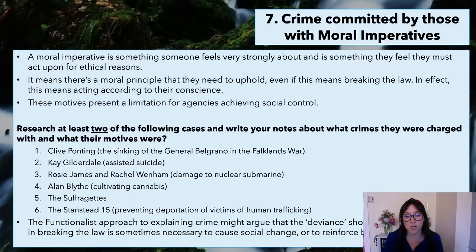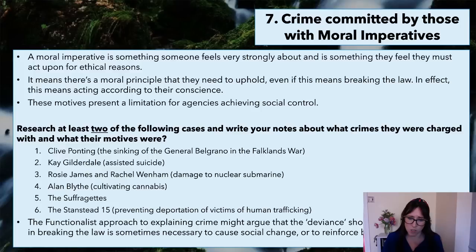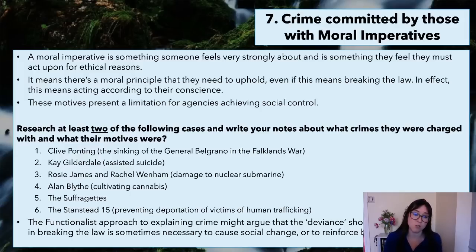The functionalist approach might argue that the deviance shown by these individuals in breaking the law is sometimes necessary to cause social change or reinforce boundary maintenance. For example, homosexuality might never have been decriminalised if people hadn't stood up against it, and if the Suffragettes hadn't stood up for women's rights, would we still not be able to vote today? So what's the difference between a terrorist who causes terror for what they believe is right, and somebody who breaks the law for what seems the right reason? It's a very hard line to know how to treat these people.